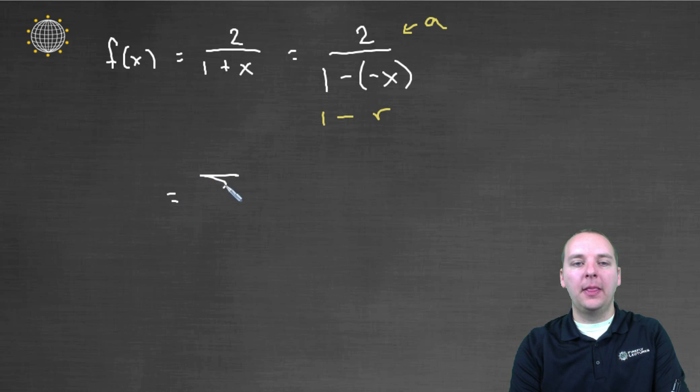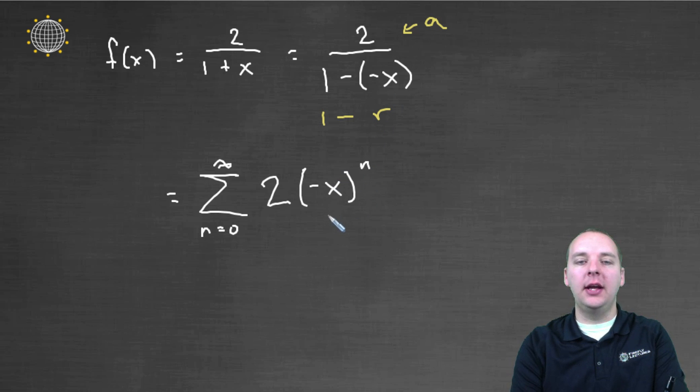So this will equal the sum from n equals zero to infinity of a times r to the n where the r is the entire negative x.